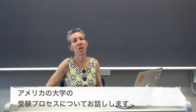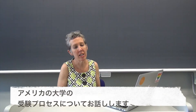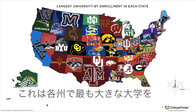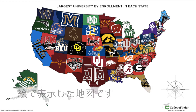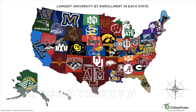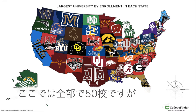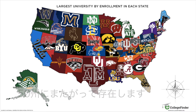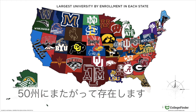Hi. Today I'm going to talk about the process of applying to colleges in the United States. This is a slide with pictures from the largest universities in each state of the United States. So that's 50 of them, but there are hundreds more universities and colleges all across the United States in every single state.